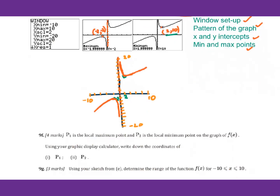Let's go to 9f. P1 is the local maximum point and P2 is the local minimum point on the graph of f of x. Use your graphing calculator. Write down the coordinates of P1 — P1 is the maximum, that is negative 2, negative 2. For P2, that will be minimum, that is 2, 10.